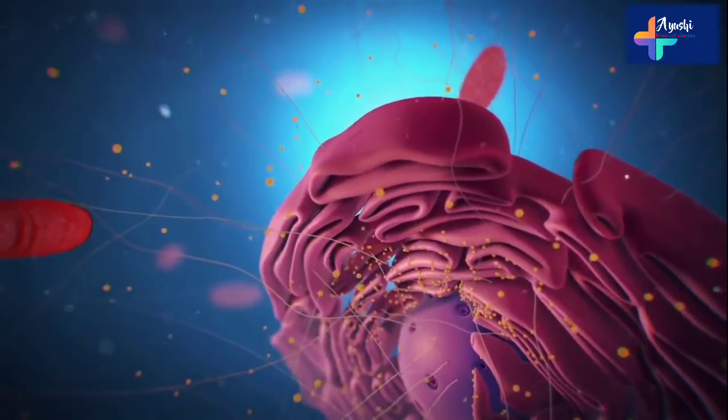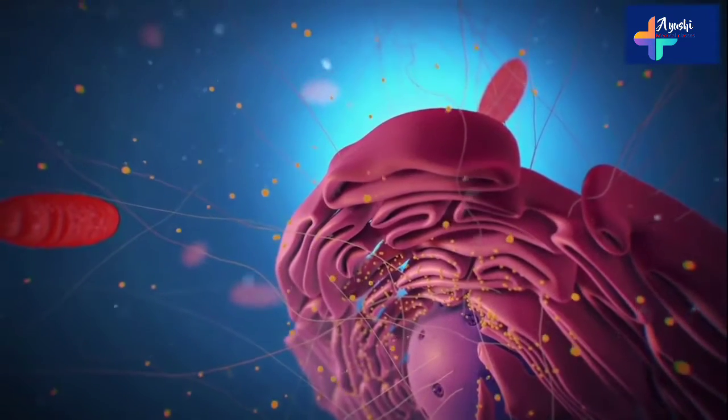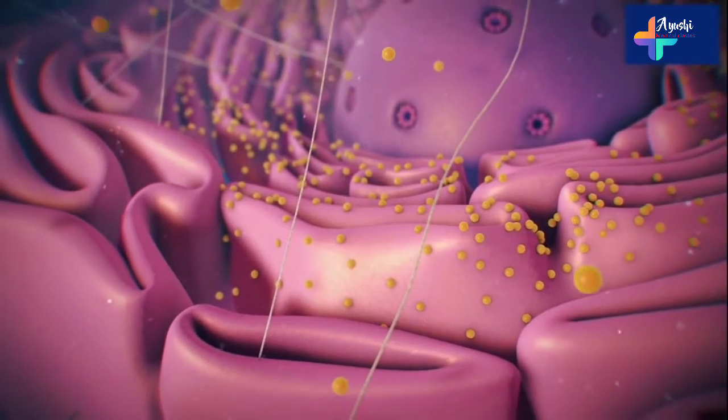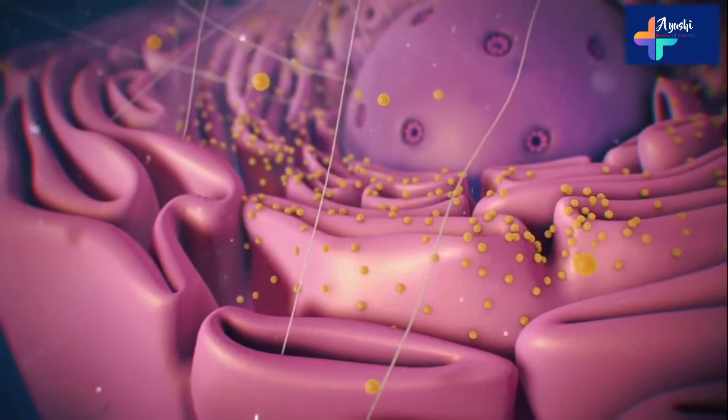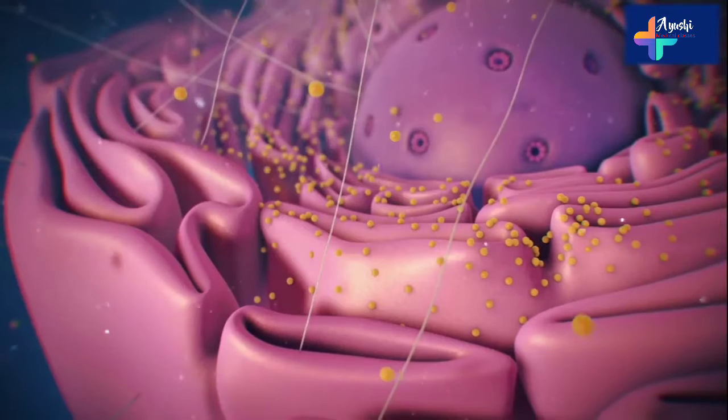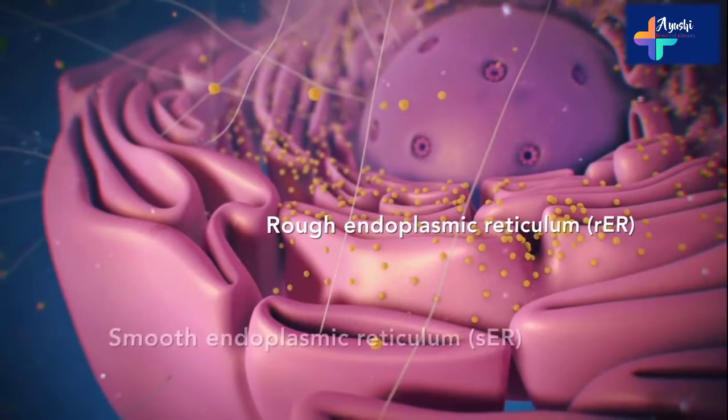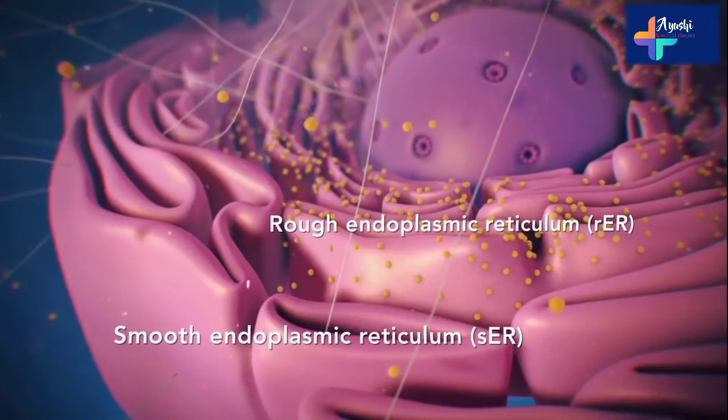Ribosomes may wander freely within the cytoplasm or attach to the endoplasmic reticulum, sometimes abbreviated as ER. There are two types of ER. Rough ER has ribosomes attached to it, and smooth ER doesn't have ribosomes attached to it.